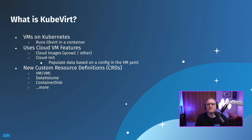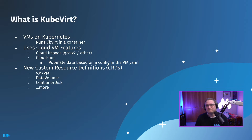So what is KubeVirt? KubeVirt is virtual machines on Kubernetes. It runs libvirt in a container. It uses a lot of the cloud features you're used to if you've used OpenStack or AWS EC2. You're going to be using cloud images like QCOW2 and other kinds of cloud images, and you're also going to be using cloud-init to populate data based on a config in the virtual machine YAML.